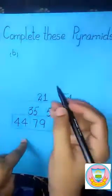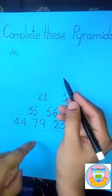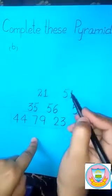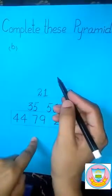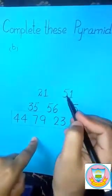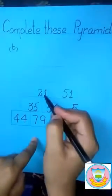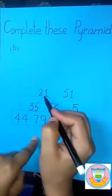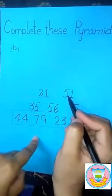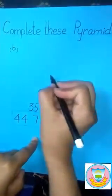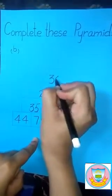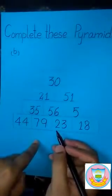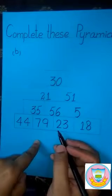Now, students, this is our last box of this pyramid. How to get the answer of this blank box? We subtract 51 by 21. When we subtract 51 by 21, we get the answer of 30. Okay students, now we have solved the pyramid. I hope you understand.